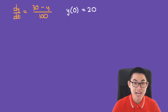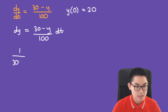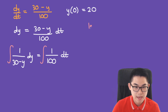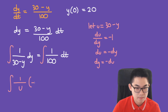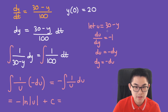Multiplying both sides by dt gives dy = (30 − y)/100 · dt. Dividing both sides by (30 − y) gives 1/(30 − y) dy = (1/100) dt. Integrating both sides: for the left side, let u = 30 − y, so du = −dy, giving −∫(1/u) du = −ln|u| + C = −ln|30 − y| + C.